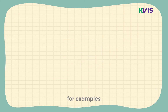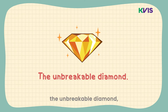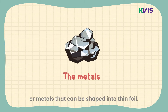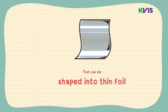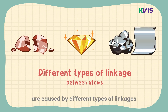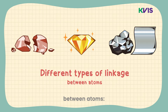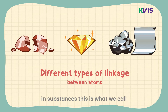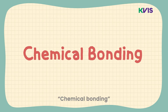For example, the hard but brittle rock salt, the unbreakable diamond, or metals that can be shaped into thin foil. These different properties are caused by different types of linkages between atoms in substances, which is what we call chemical bonding.